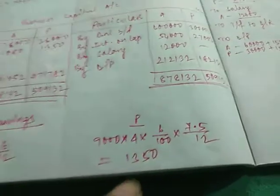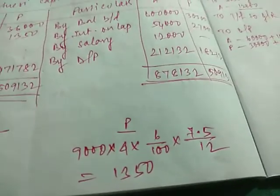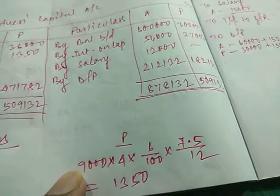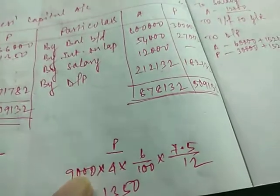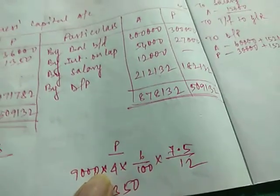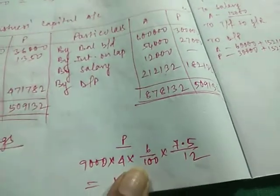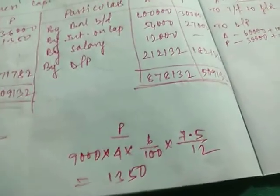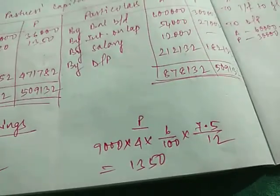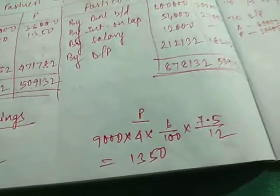Let us check for P. P has withdrawn 9000 at the beginning of each quarter. So there are 4 quarters in a year. Quarter is a period of 3 months. So 9000 withdrawn in each quarter means he has withdrawn 9000 for 4 times in a year, 9000 into 4. So 9000 into 4 into 6% is the rate, 6 by 100, and 7.5 is the rate for the beginning of quarter. Beginning of quarter is 7.5, mid of quarter is 6, and the end of quarter is 4.5. So we will use 7.5 by 12 that will provide us 1350 for P.